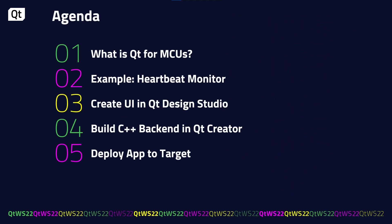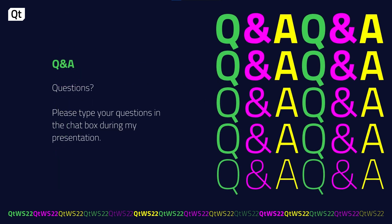We'll start with a very brief overview of Qt for MCUs. I'll show you the example application for today, which is a simulated heartbeat monitor. Then I'll show you how to build that example from scratch, first by creating the UI in Qt Design Studio, then moving to Qt Creator to build out the C++ backend code and deploy our app to the target. If you have questions at any point in the talk, please put them in the chat box and I or someone else from Qt will respond.